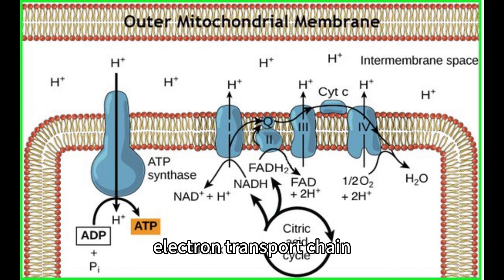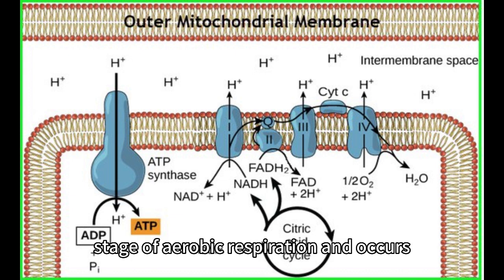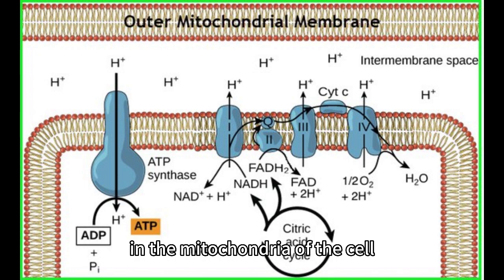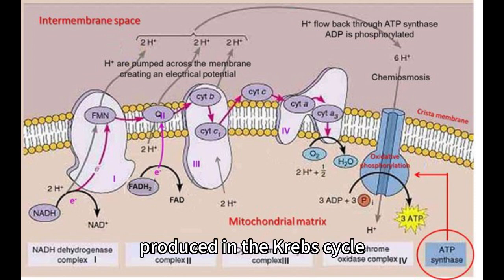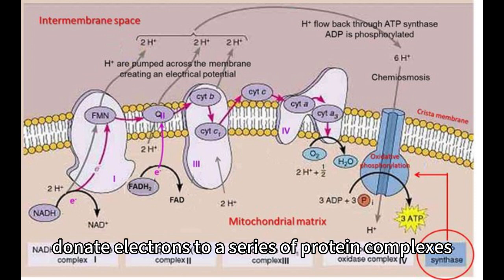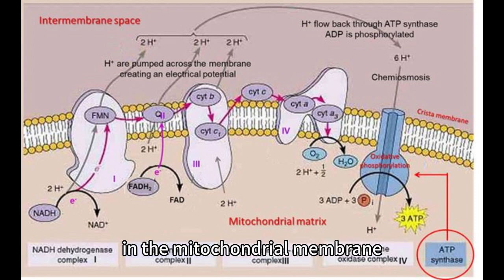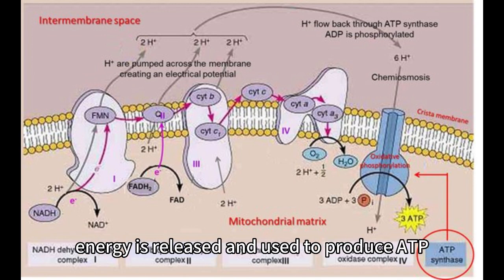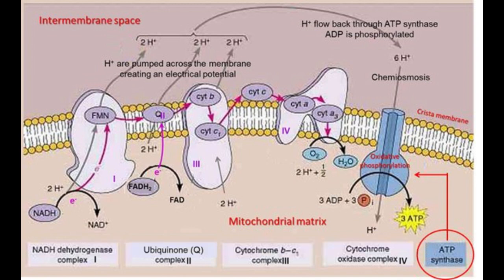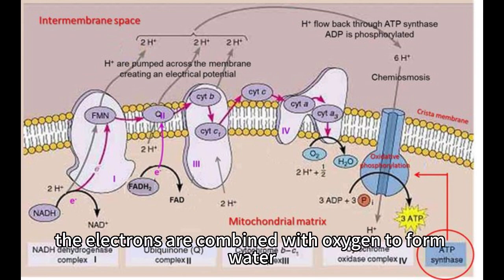The electron transport chain is the final stage of aerobic respiration and occurs in the mitochondria of the cell. During this stage, the reducing agents NADH and FADH2 produced in the Krebs cycle donate electrons to a series of protein complexes in the mitochondrial membrane. As the electrons are passed down the chain, energy is released and used to produce ATP. At the end of the chain, the electrons are combined with oxygen to form water.